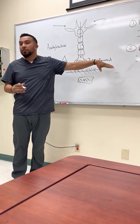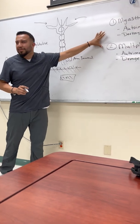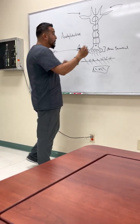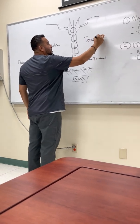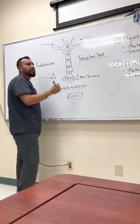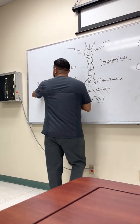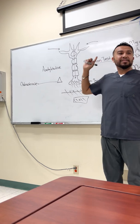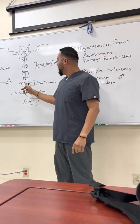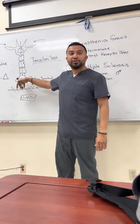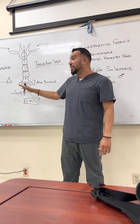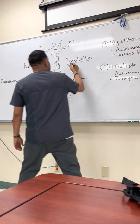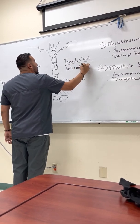To distinguish between myasthenia gravis and multiple sclerosis, we perform the Tensilon test. Remember cholinesterase — it recycles acetylcholine so none is wasted. But if a patient has myasthenia gravis where receptor sites are destroyed, you want to leave the acetylcholine there so it can eventually reach the receptor sites that are still working. So you want to block cholinesterase. We give something called anti-cholinesterase.